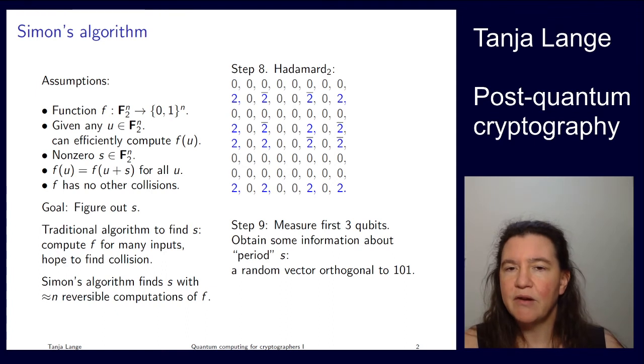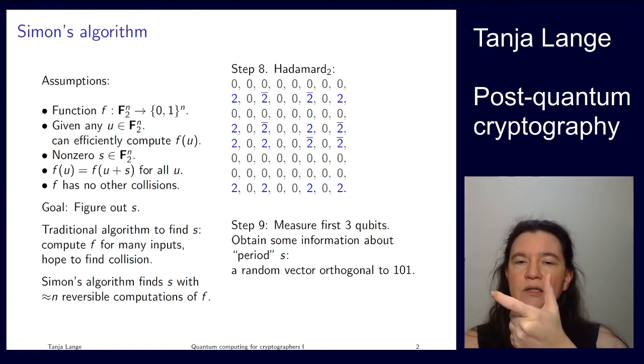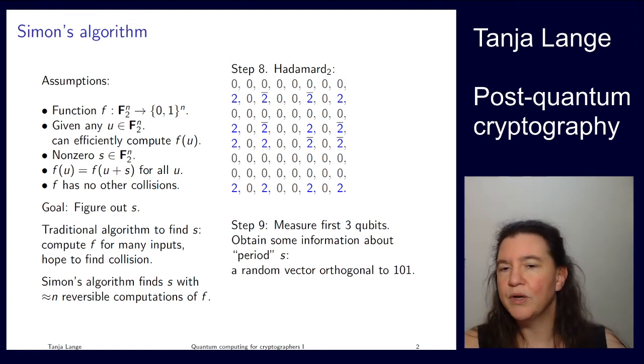Now think of the binary representation of those, which is either the all-zero vector, so 0-0-0, 0-1-0, 1-0-1, or 1-1-1. And so each of those has the property that it's perpendicular, so orthogonal to 1-0-1, meaning if you do the dot product of these with 1-0-1, you're getting 0. That's trivially the case for 0.